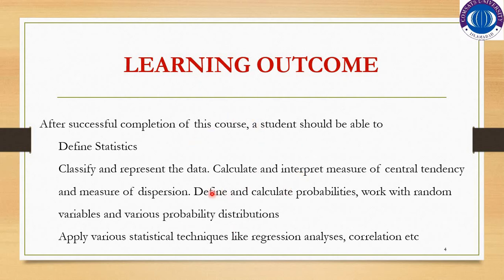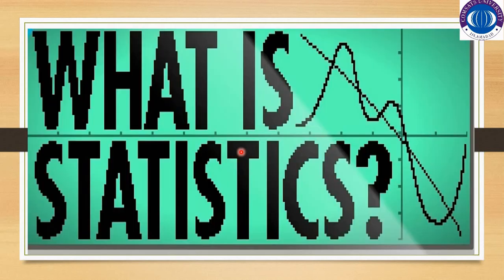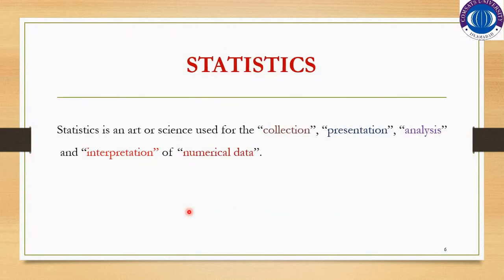So what is statistics? Statistics is basically the game of numbers — it depends on numerical data. Formally defined, statistics is an art or science used for the collection, presentation, analysis, and interpretation of numerical data. Collection is the very first stage — how to collect the data; then presentation — how to represent the data.